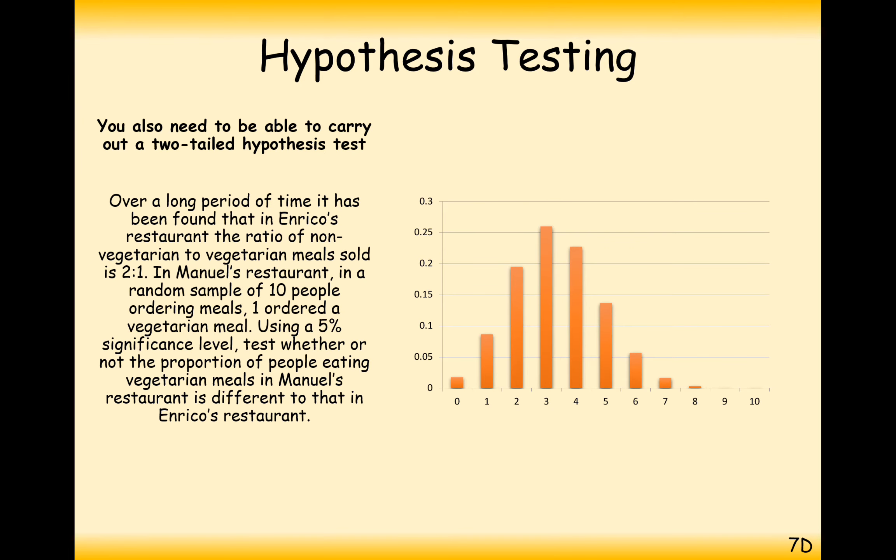So let's have a look at another question here, then. So, over a long period of time, it has been found that in Rico's restaurants, the ratio of non-vegetarian to vegetarian meals sold is 2 to 1. In Manuel's restaurants, and a similar random sample of 10 people, one person has ordered a vegetarian meal. Using a 5% significance level test whether or not the proportion of people eating vegetarian meals in Manuel's restaurants is different to that of Enrico's restaurant.